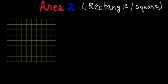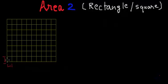Today in this second video on area, we will try to find the formula for the area of a rectangle and also derive the formula for the area of a square. We have a grid made up of tiny squares, where each tiny square has dimensions 1 unit by 1 unit. As we learned in the earlier video, the area of each tiny square is 1 square unit.